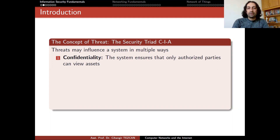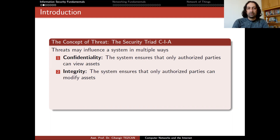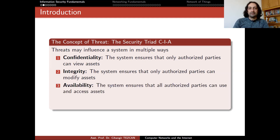Starting with confidentiality: the system ensures that only authorized parties can view assets. We have almost covered all of the problems in this area using cryptographic algorithms, but I will briefly mention them again. The second part is integrity: the system ensures that only authorized parties can modify assets. In terms of cryptography, we solve this by hash functions, message authentication codes, or authenticated encryption. The third one is availability.